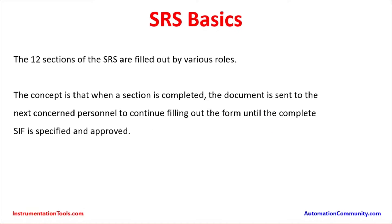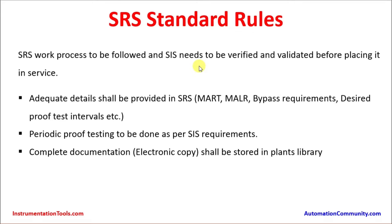The SRS has 12 sections. The concept is that when a section is completed, the document is sent to the next concerned personnel to continue filling out the form until the complete SIF is specified and approved. The SRS is for each SIF, so the 12 steps must be completed in sequence — whenever one step is completed by a particular department, it goes to the respective department or personnel to address the next step. The SRS work process must be followed, and SIS loops need to be verified and validated before placing them in service.